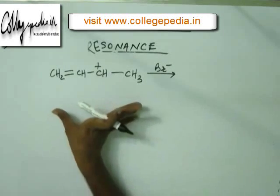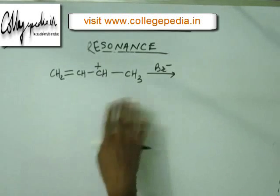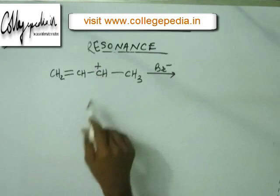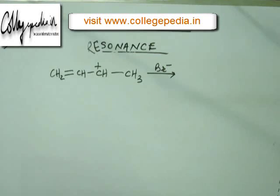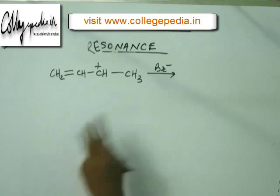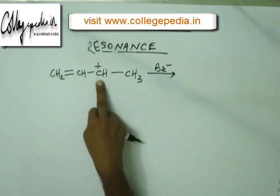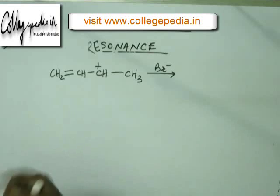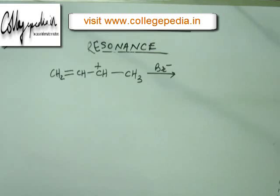Suppose I have this intermediate in our system, and I have put bromide ion somehow in that system as well. This bromide ion will approach this C+ due to Coulombic force of electrostatic attraction and they will result in formation of a bond — a C-Br bond will be formed and you'll finally have a neutral compound. The question is: how many possible products will you get?